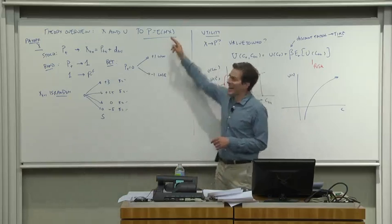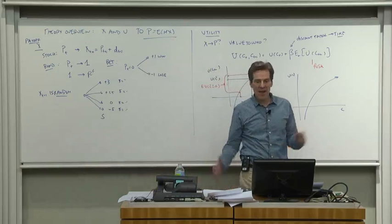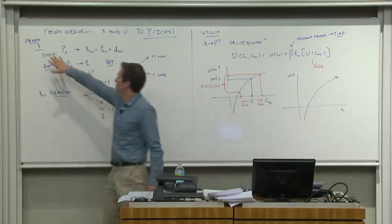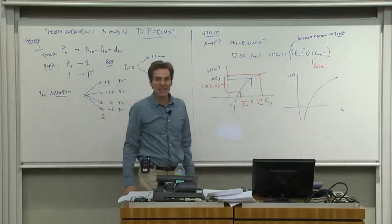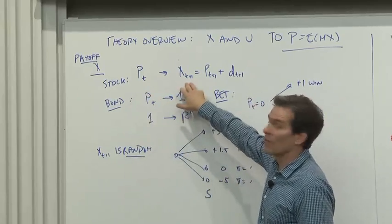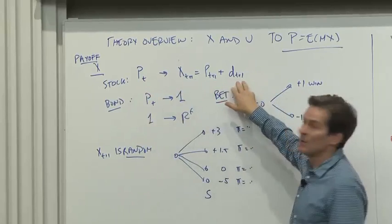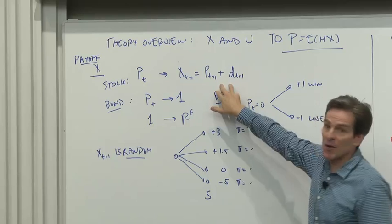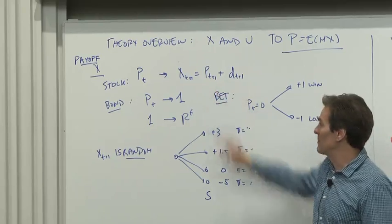Let's understand what x is. x is a way of encompassing the payoff of any asset. For example, if I have a stock, I pay a price p for it and what I get tomorrow, the payoff is tomorrow's price plus tomorrow's dividends. If I buy it for a price p, that's the amount of money I could sell it for tomorrow and be done.